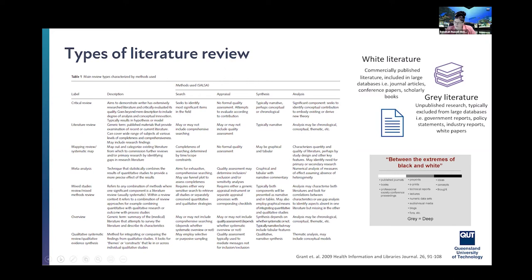In terms of types of literature review, there's a very good paper by Grant and colleagues in a health information libraries journal which covers different types of lit reviews relevant to anyone in any area — their typology covers methods, strengths and weaknesses of each approach, and when and how to use each. Before you start, you need to work out what type of literature review you're doing and be able to justify why that type and not another.